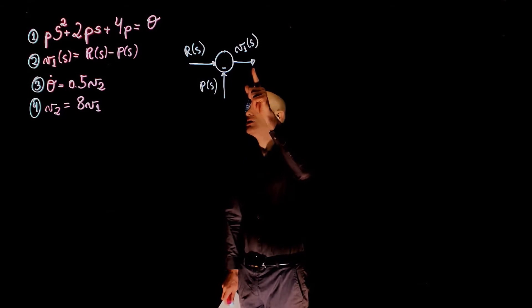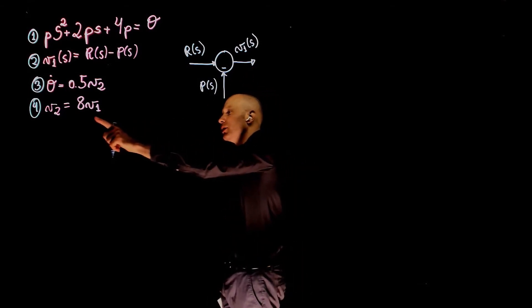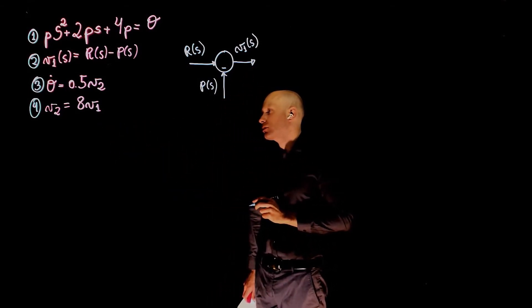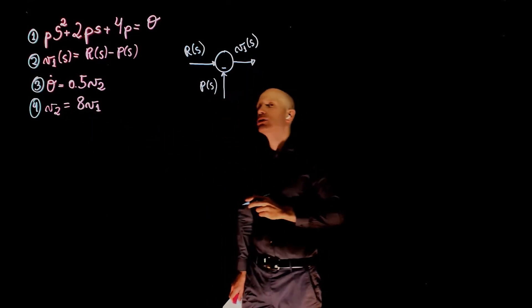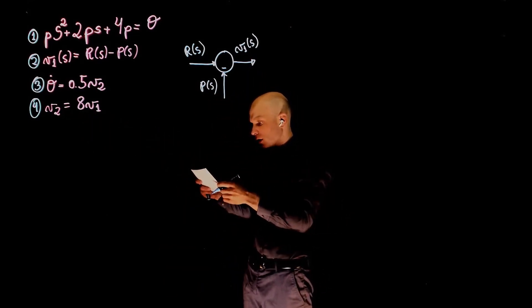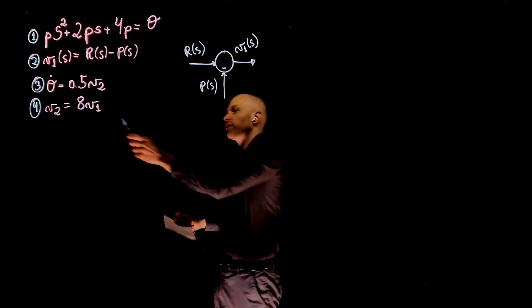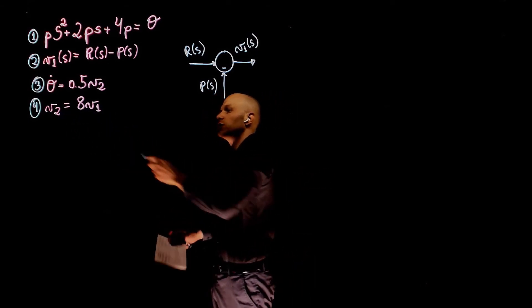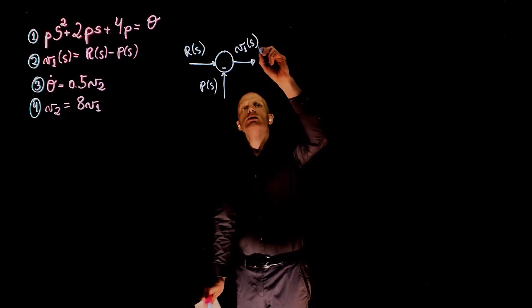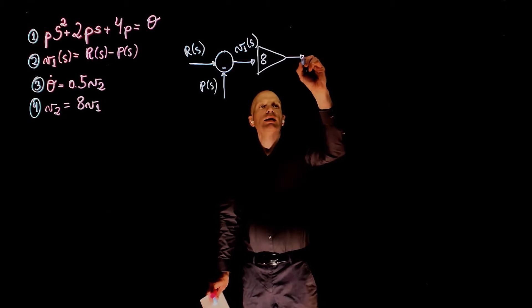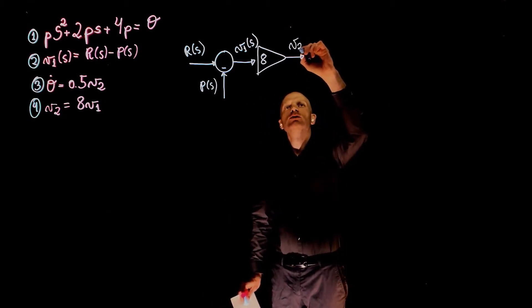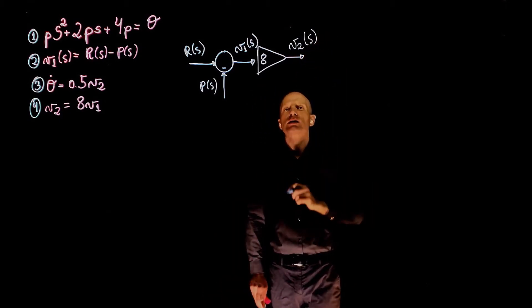Now the output here is v1. v1 appears in equation 4. If we multiply v1 by 8, that gives us v2, which is the output voltage. So you have the input voltage, output voltage, and this is a gain. By multiplying v1 by 8, we get v2 of s.